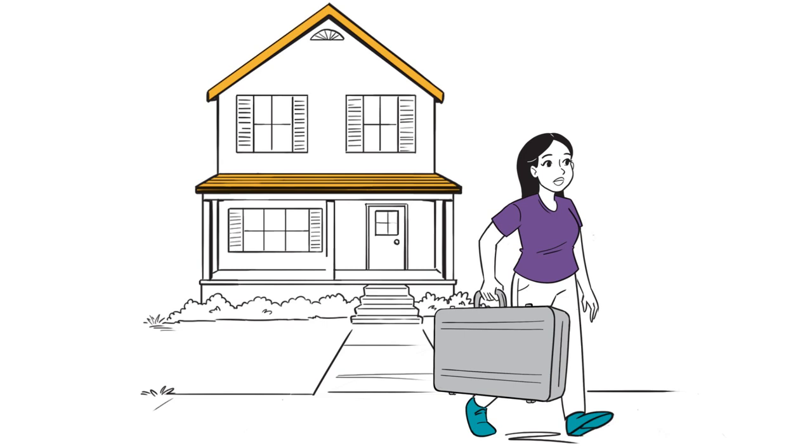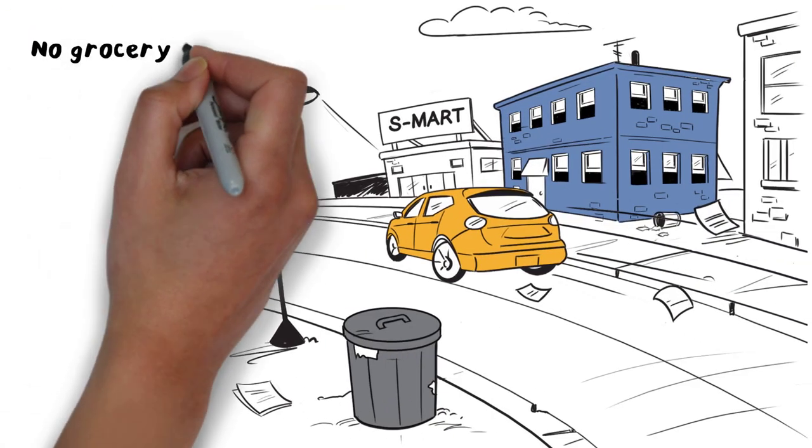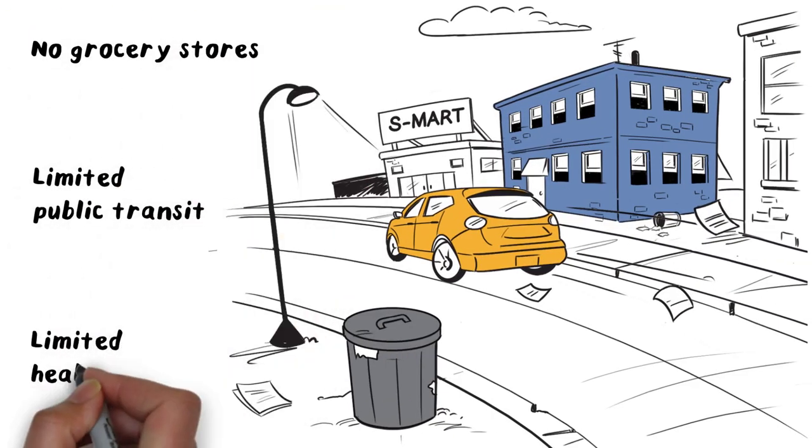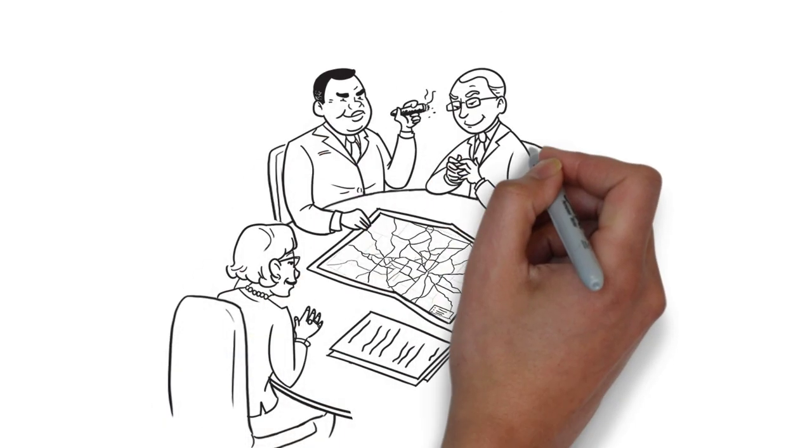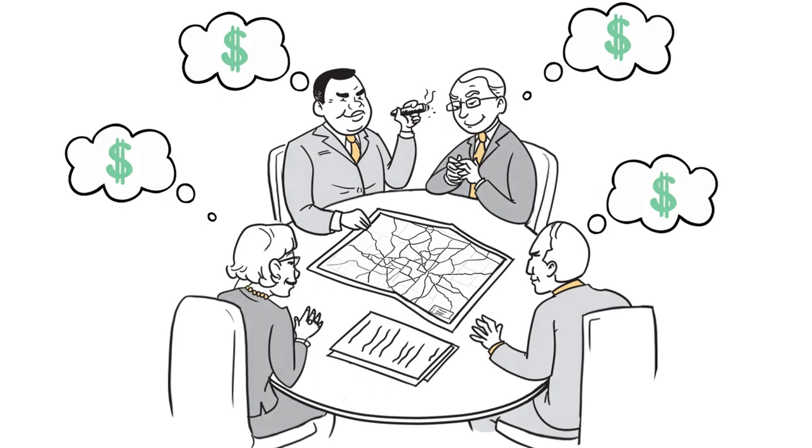The neighborhood Jessica can afford has no grocery stores, limited public transit, and limited health care. To save money, policymakers change the water source to a more polluted river.